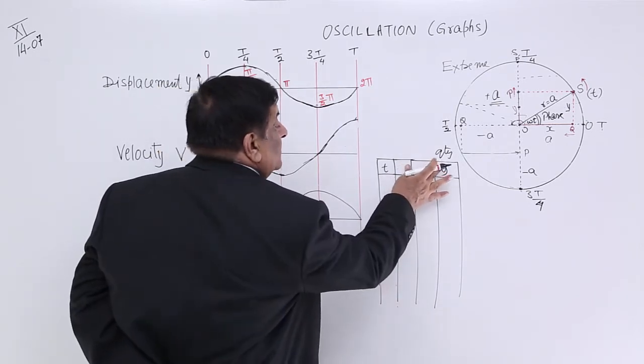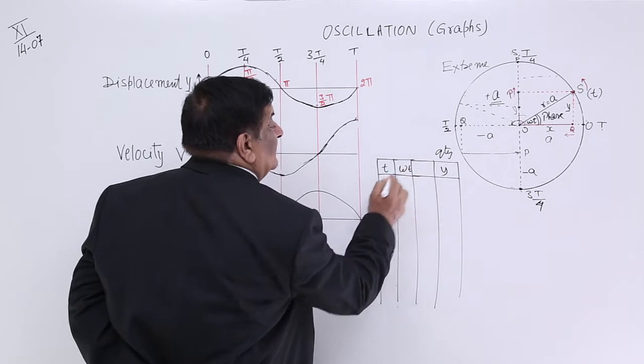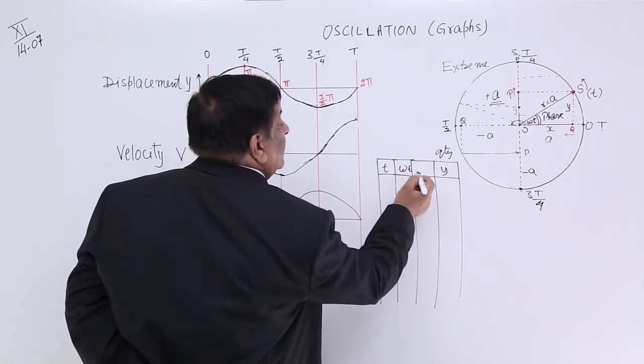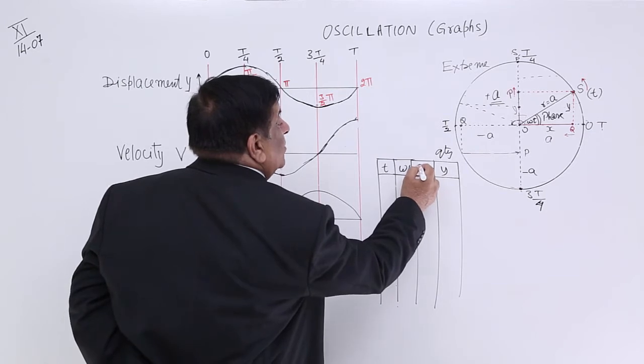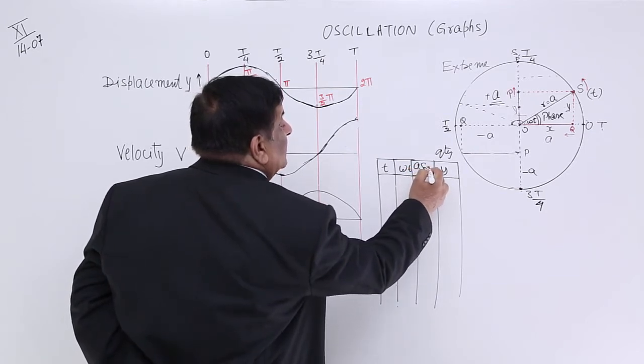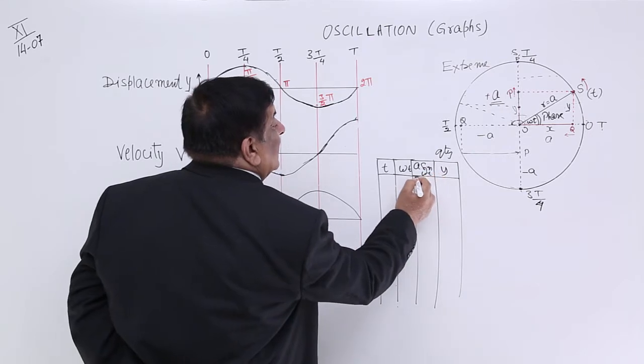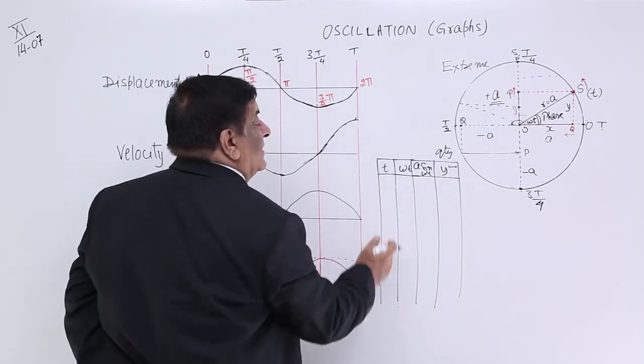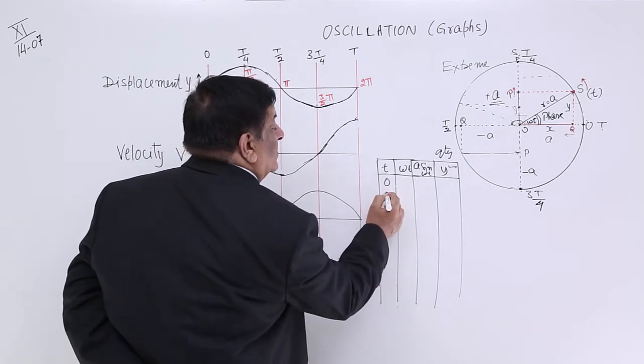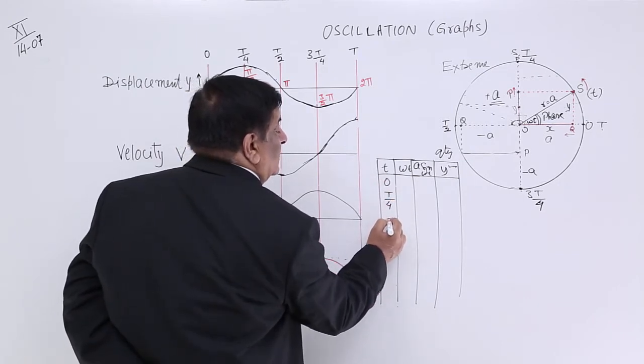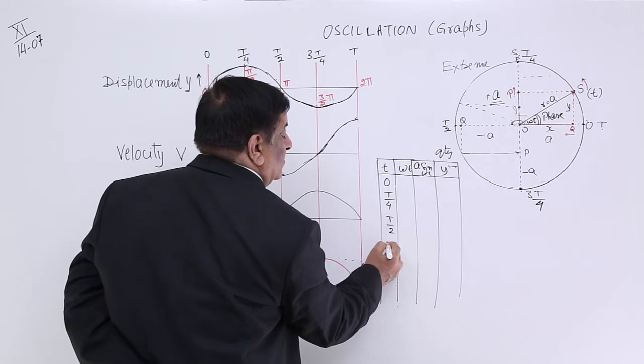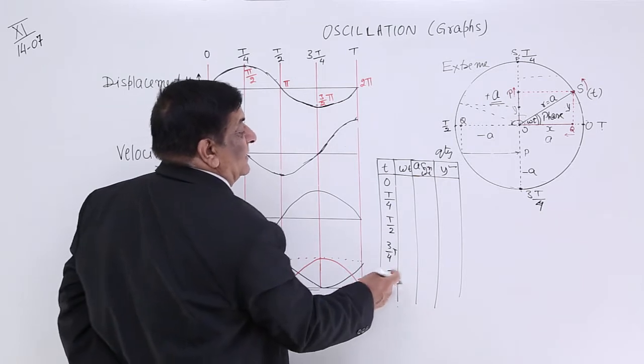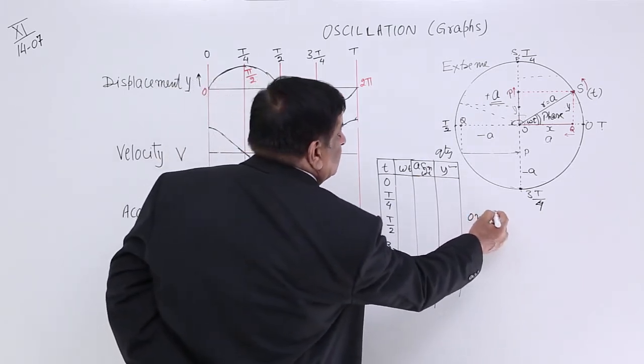Now with t, we will convert it into omega t. Then omega t we will place in the formula. What is the formula? A sin omega t. And that will give us the value of y. How we have changed t? 0, t by 4, t by 2, 3 upon 4t, and t. This is one cycle.